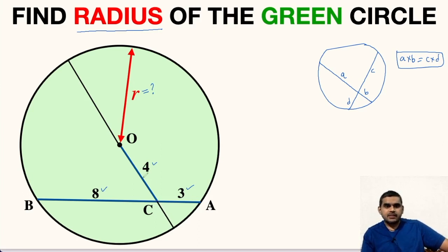This will be the diameter. From here to here this is small r also from here to here this is small r. Now, because this distance is already known to us that is 4 units, the remaining distance will be r minus 4.